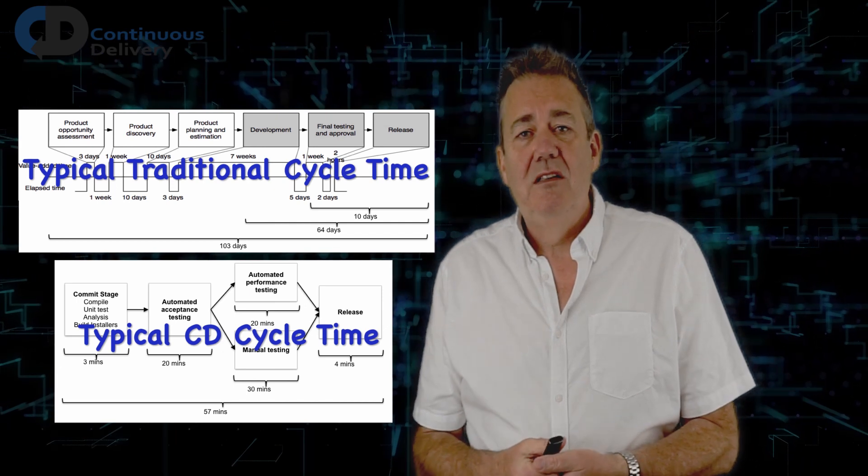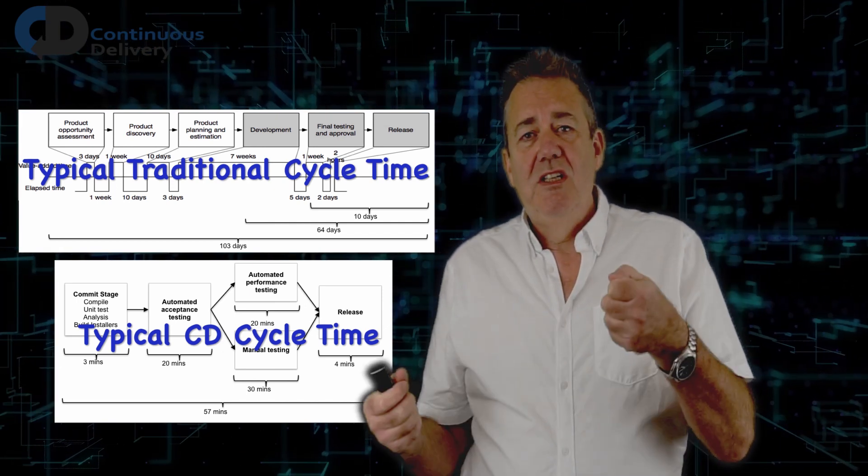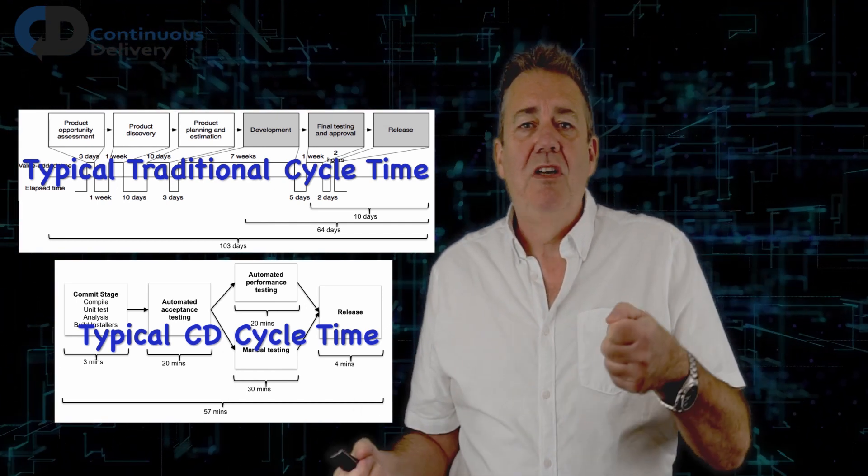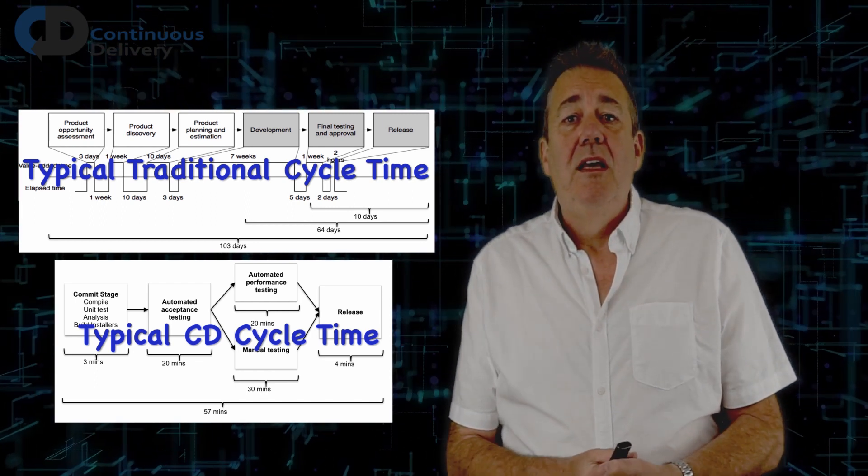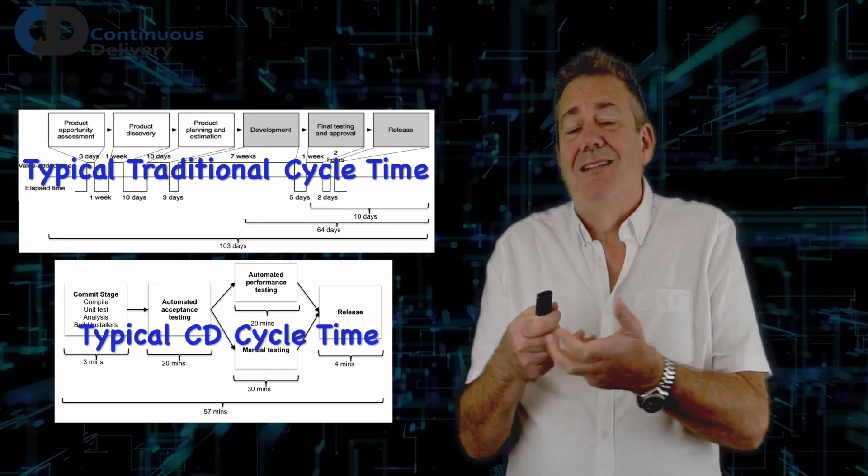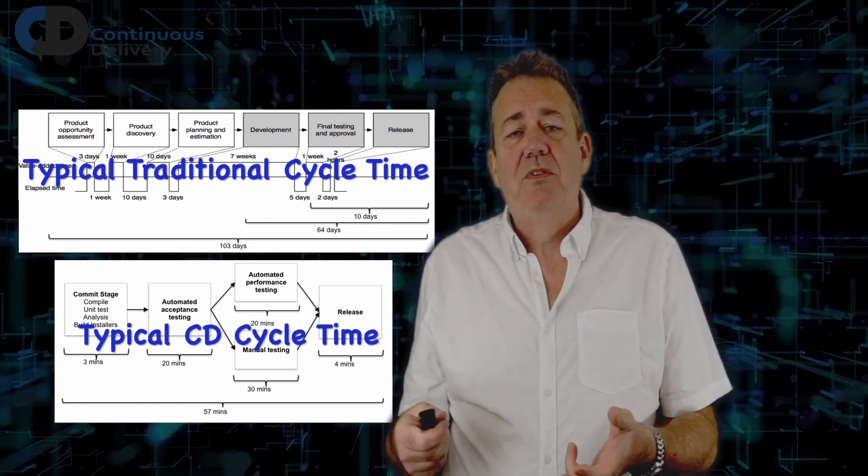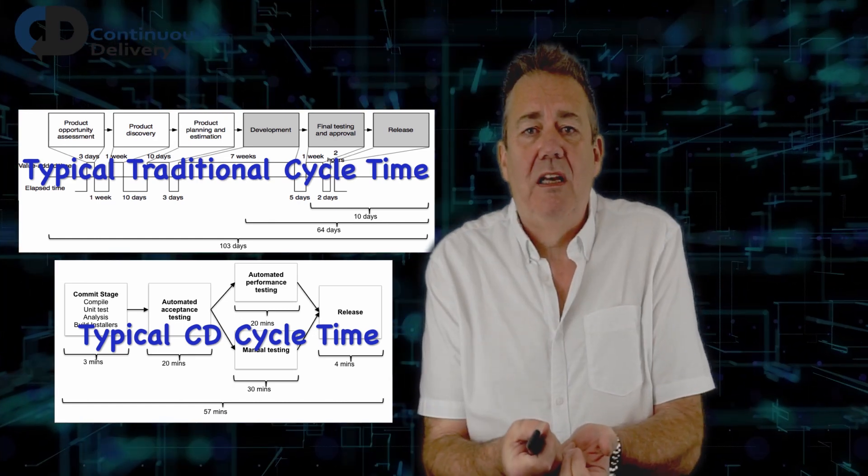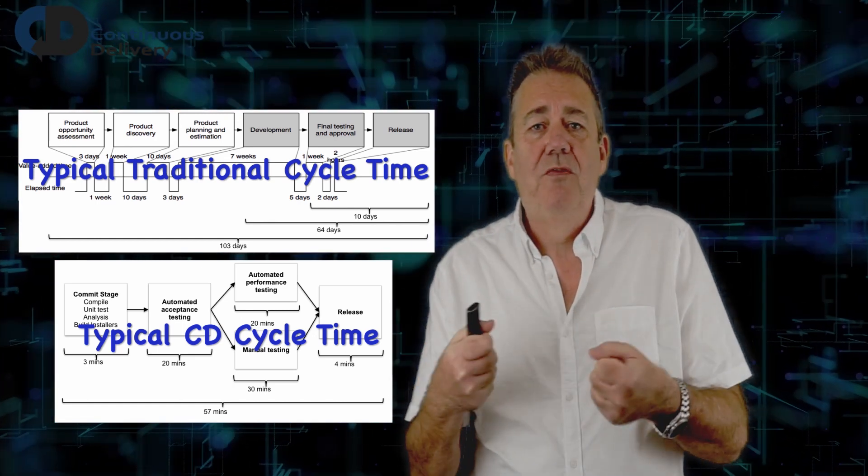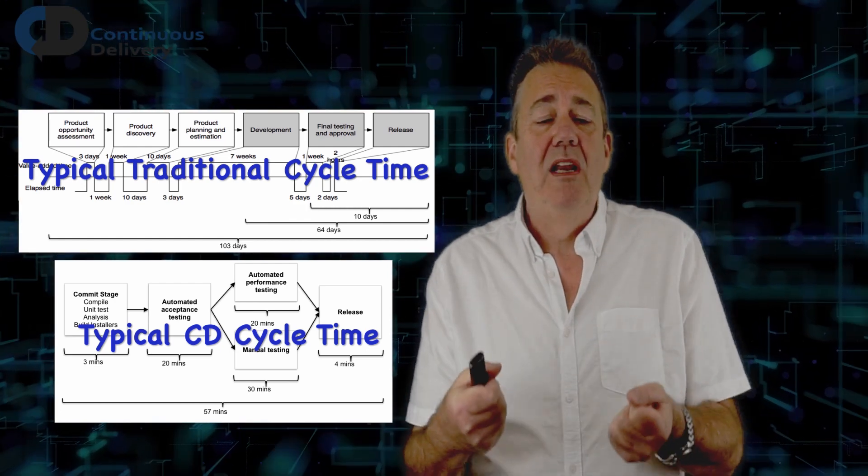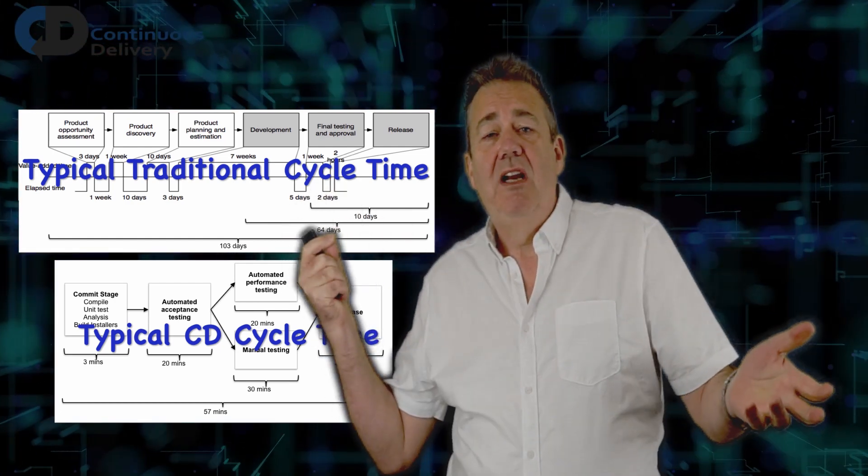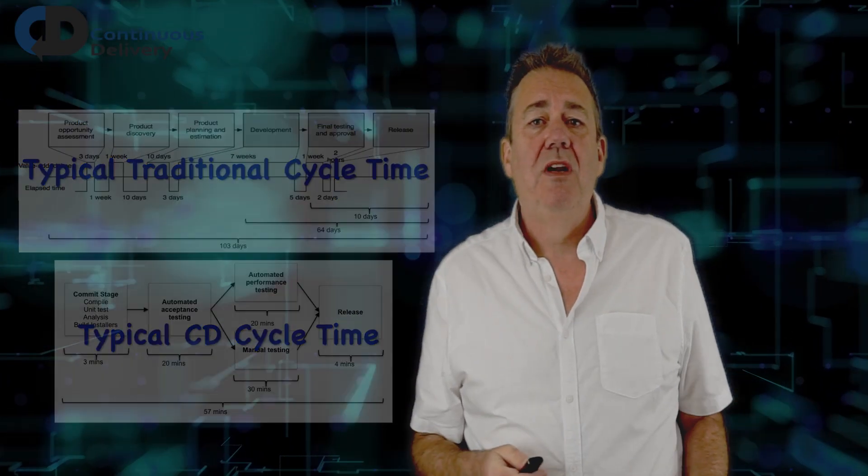So one of the things that we can do in order to reduce Stephen Bungay's gaps and reduce the impact of the things that we don't know is to go around faster. And as a side effect, that also helps us to improve the quality of our releases. Because at any given point for any given release, that release is less risky than the big release that we were planning to do one hundred and three days in the future.